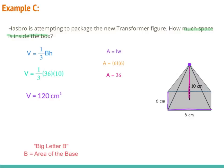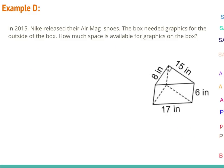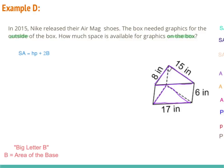At example D, in 2015 Nike released their Air Mag shoes. The box needed graphics for the outside — how much space is available for graphics on the box? Since they're talking about graphics on the outside, we're talking about surface area. We have a flat top and flat bottom that are both triangular, so we have a triangular prism. The surface area formula is SA equals height times P — where P is the perimeter — plus 2 times big B, the area of the base.